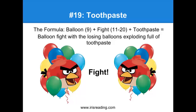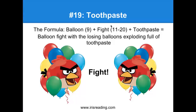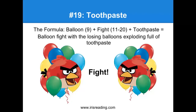Number 19 is toothpaste. The formula: balloon (nine) plus fight plus toothpaste equals balloons fighting — with the losing balloon exploding full of toothpaste. Whatever balloon loses just explodes, and I want you to picture toothpaste going all over the place. You can picture angry bird balloons fighting each other, and the losing balloon explodes with toothpaste everywhere. That's how we're going to remember 19 being toothpaste.